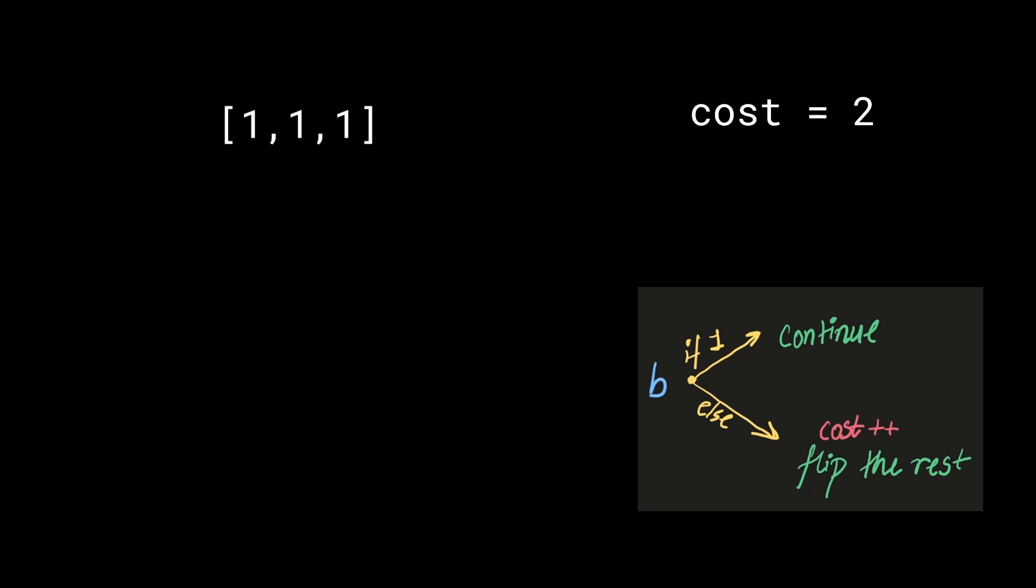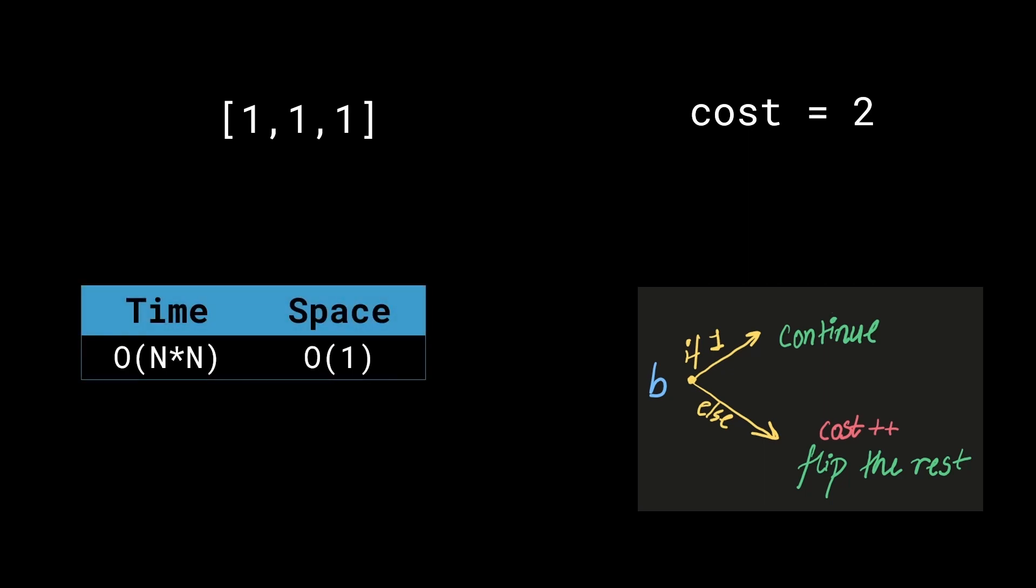Now, let's try to analyze the time and space complexity of the solution. The space complexity is order of 1 since we only ever store this cost variable on the top right.